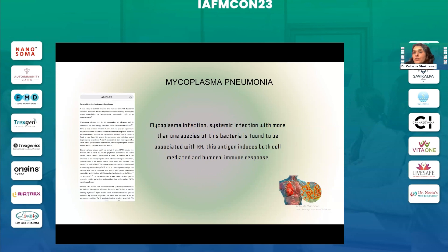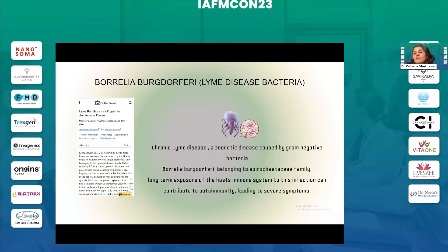Mycoplasma pneumoniae is another infection that has been found in various papers to be associated with rheumatoid arthritis.